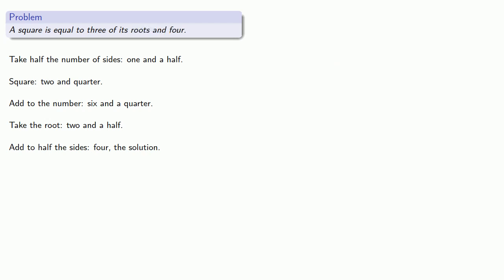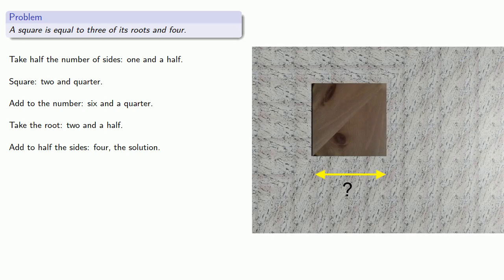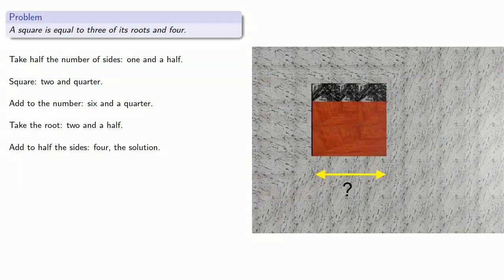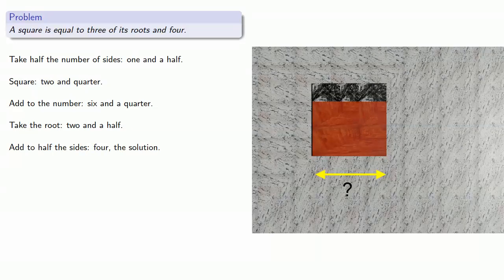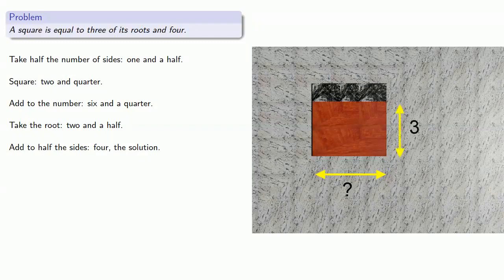So this one is a little bit different because we have a square equal to 3 of its roots and 4. So we might begin with our square of unknown side, but this square is equal to a rectangle that's 3 wide and has the same side length, as well as another rectangle equal to 4. And so we might imagine this square to be composed of 2 pieces. Our bottom piece here corresponds to 3 of its roots, so it's the same width as a square, but its height is 3, and this other figure has an area of 4.